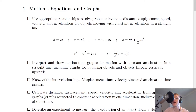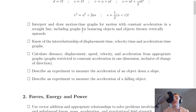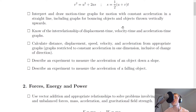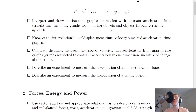It also helps to be able to define these terms. Next, you need to interpret and draw motion-time graphs for motion with constant acceleration in a straight line, including graphs for bouncing objects and objects thrown vertically upwards. Remember we looked at motion-time graphs for uniform acceleration, constant velocity and uniform deceleration, as well as specific cases for a bouncing ball and an object thrown vertically upwards. The velocity-time graph for the object thrown vertically upwards is a straight diagonal line downward, whereas for the bouncing object it has a zigzag shape, depending on whether upwards or downwards is defined as positive.